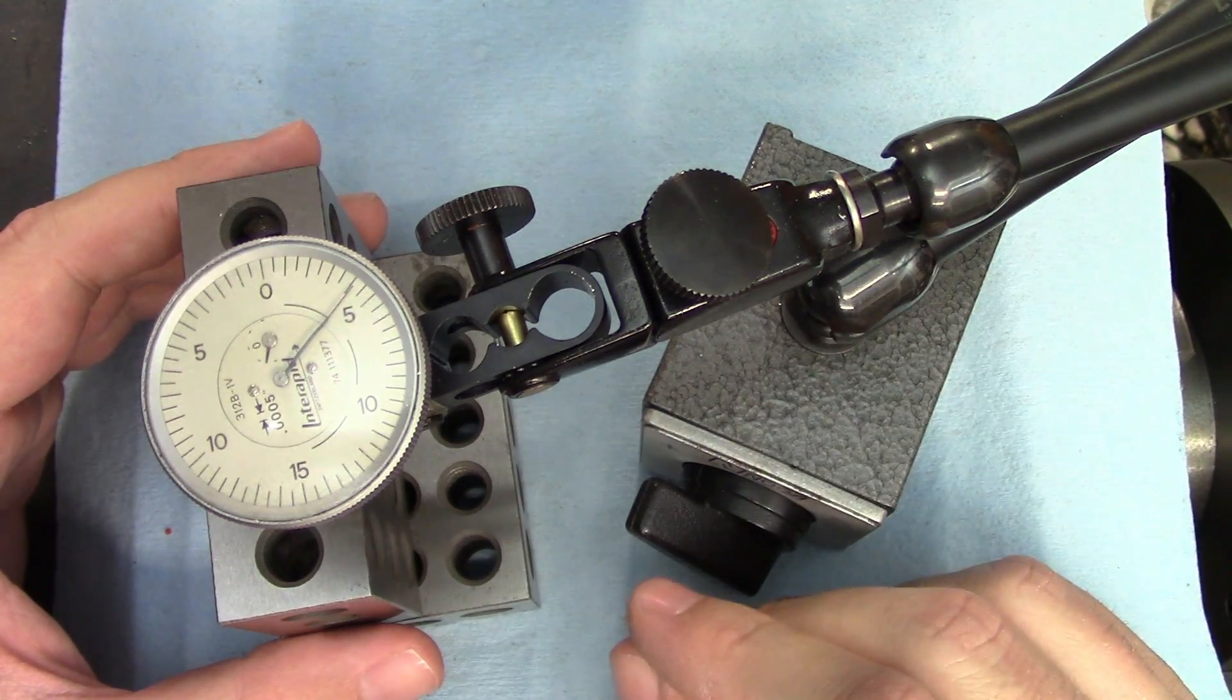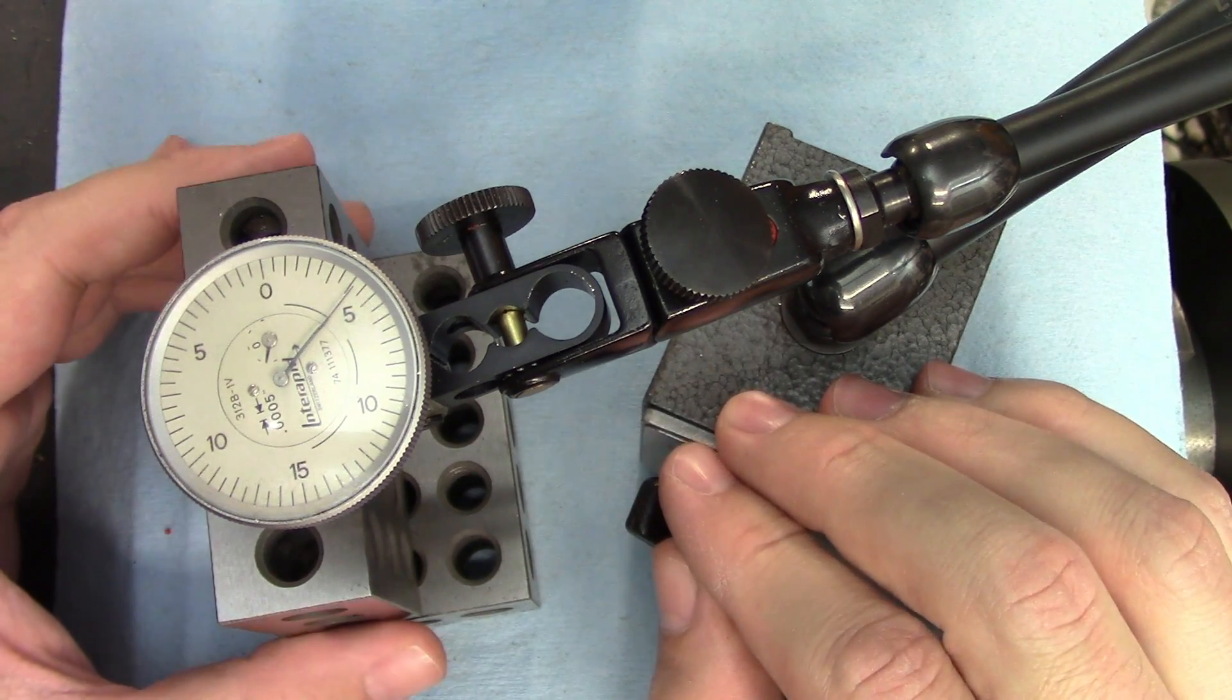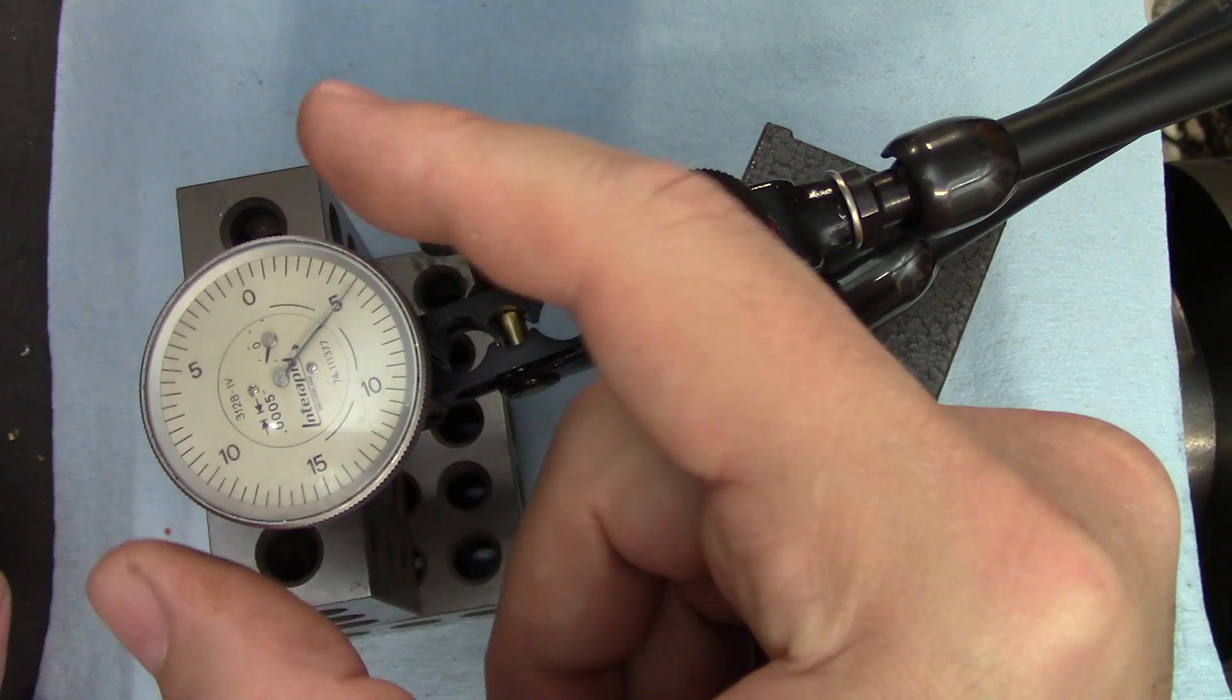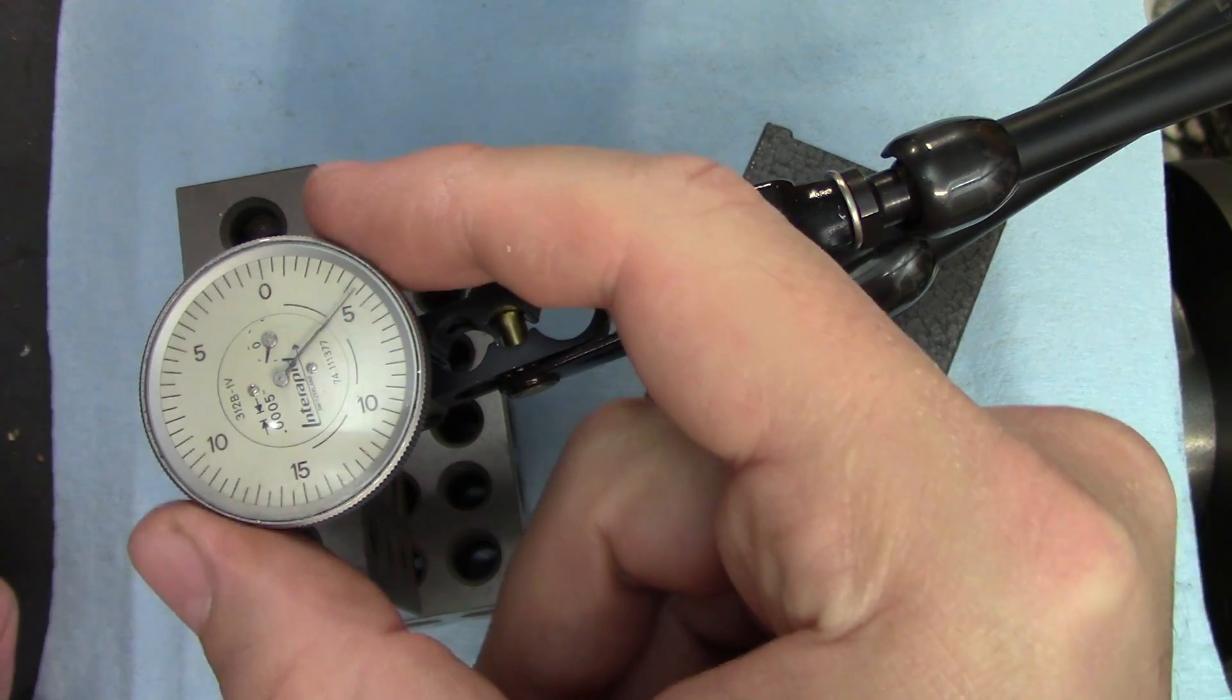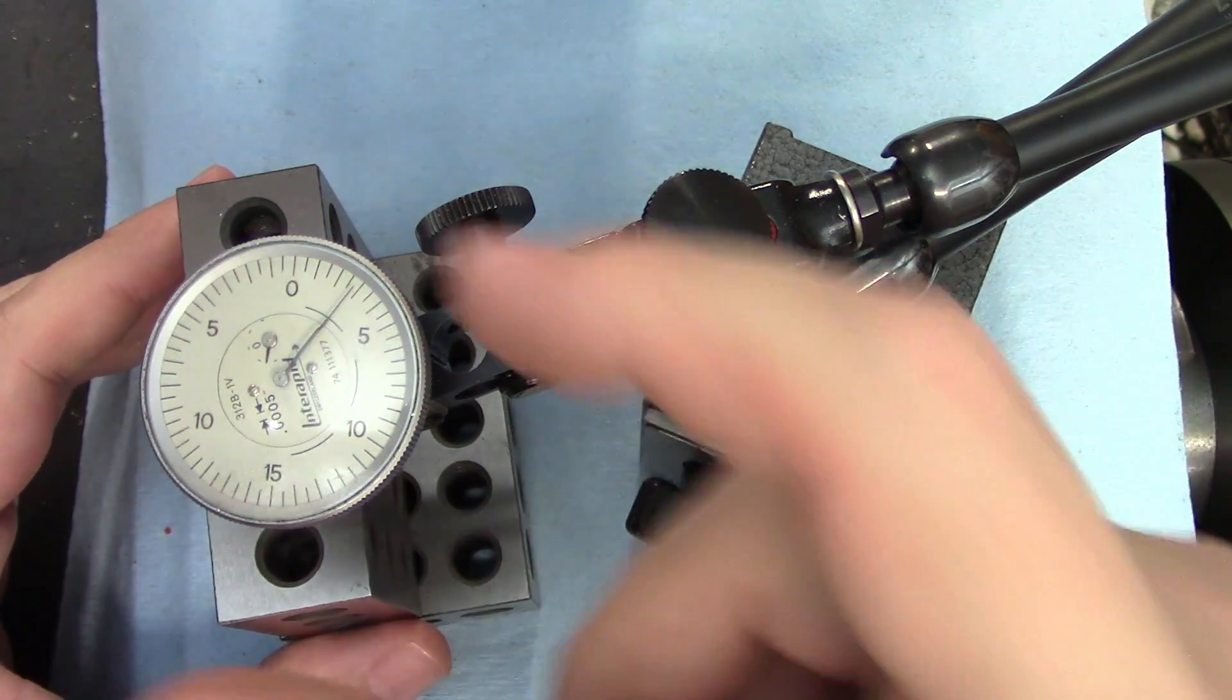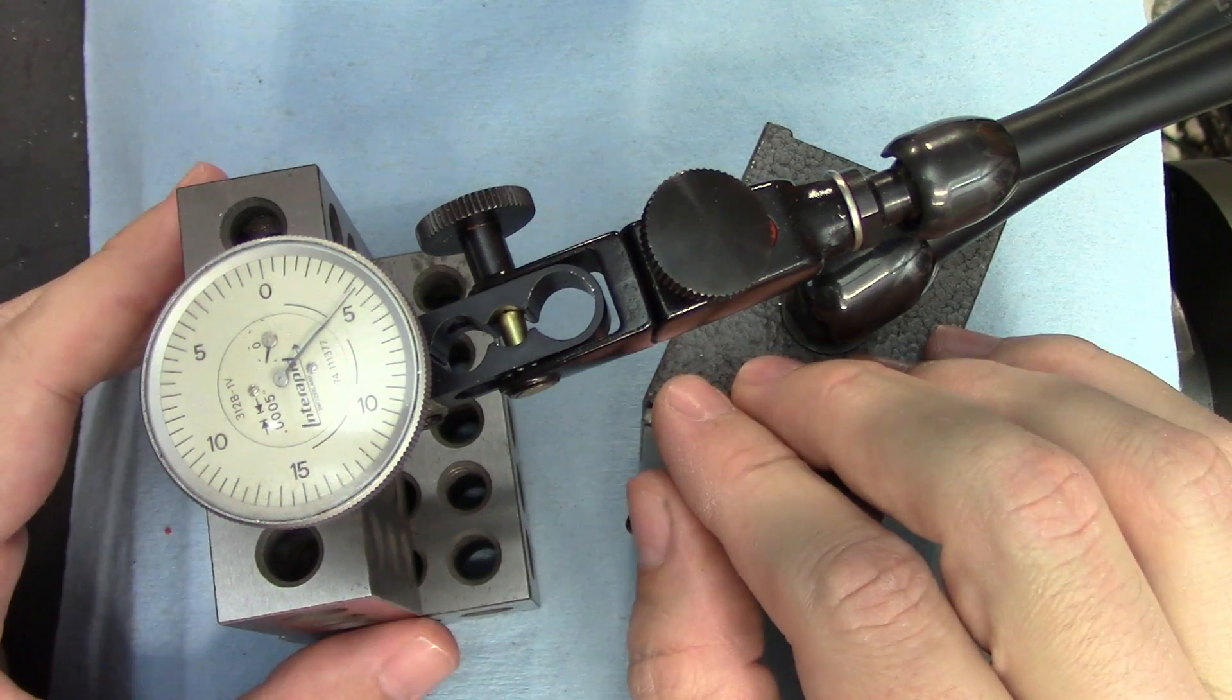However, there are plenty more times when having a fine adjustment is handy or even essential because you have no other good way of adjusting the indicator to zero. Notice I said good way because you can always try turning the bezel to move the dial face, but you'll find it to be an exercise in frustration. Turning the bezel on these will cause the indicator to jump around and move, and you can find yourself chasing the zero back and forth. I use the bezel to get the face in a convenient orientation so I can read it, and then I try not to touch it again unless I have to.